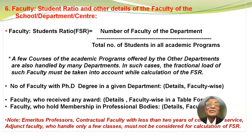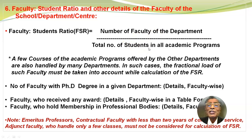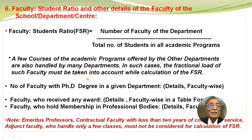Faculty-student ratio and other details of the faculty of the school or department or center. The FSR is defined as the number of faculty of the department divided by the total number of students in all the academic programs put together. Please note: a few courses of the academic programs offered by other departments are also handled by many departments. In such cases, the fractional load of such faculty must be taken into account while calculating the FSR.